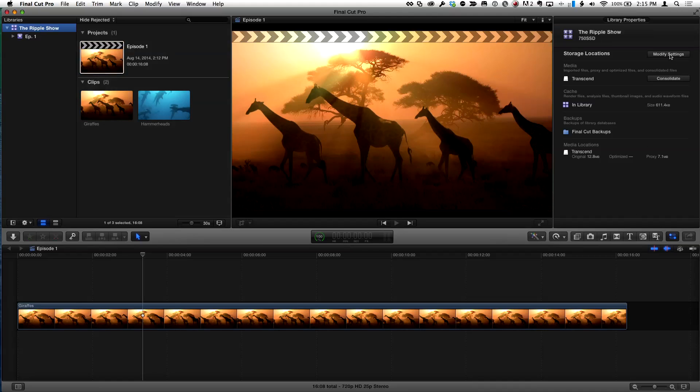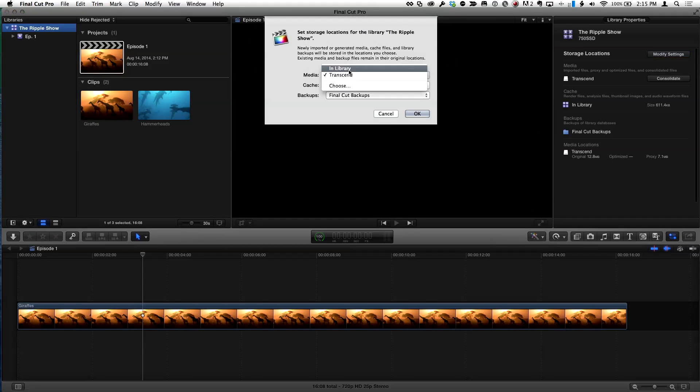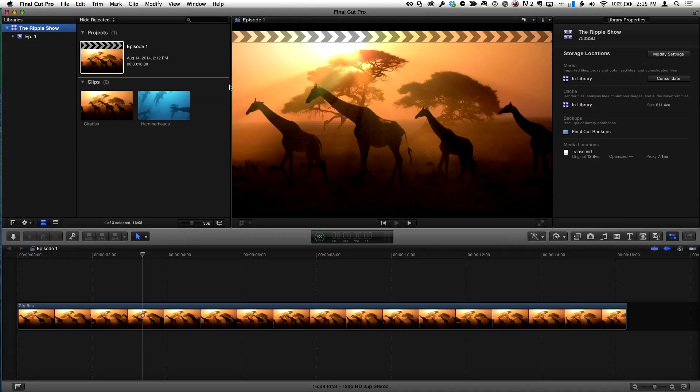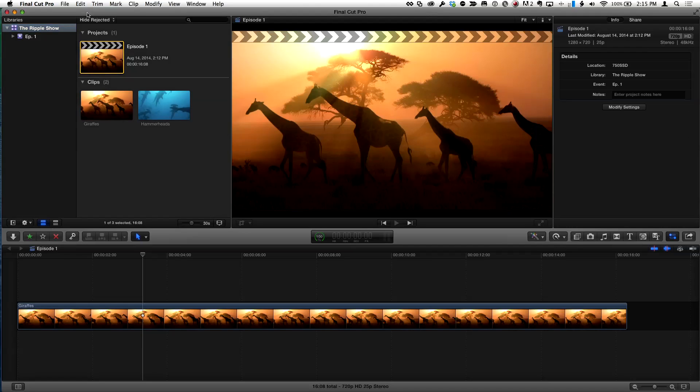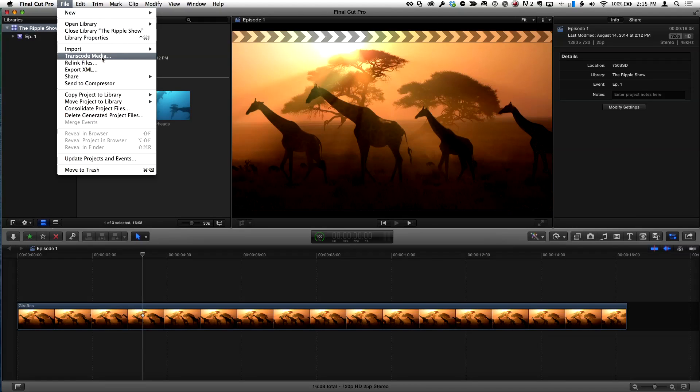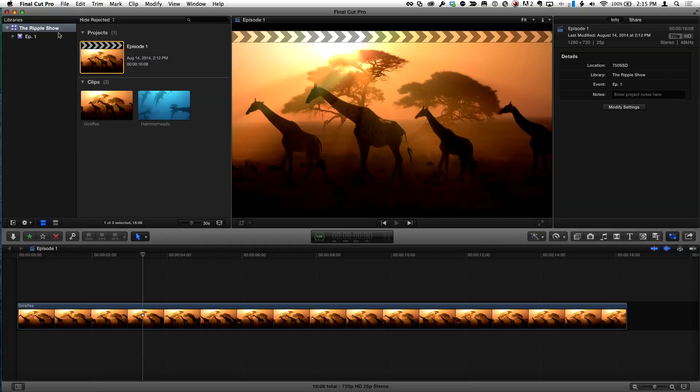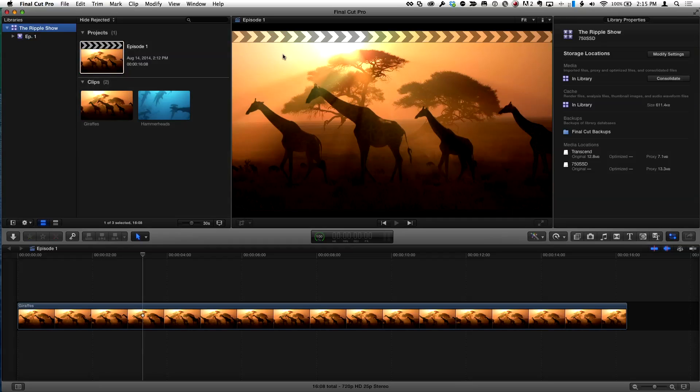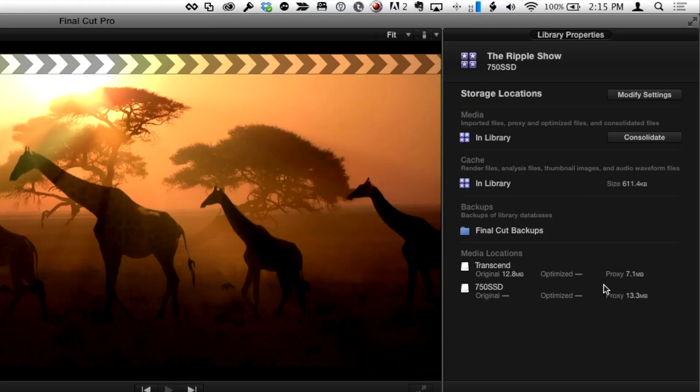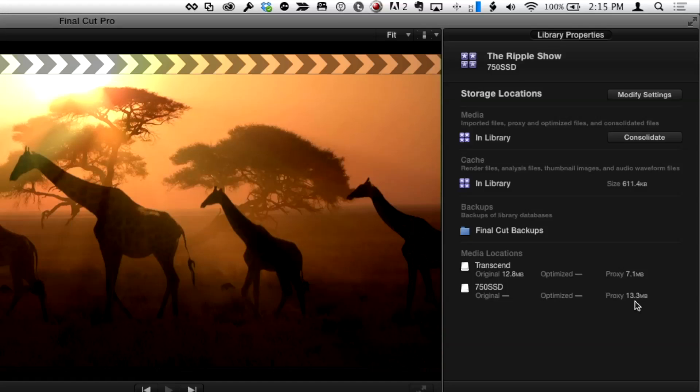Now what I can do with the library selected is change my storage location to the library on my local drive. Then with that project selected again, I can choose to transcode media which will transcode just that single clip in this case, just the clips in that project, which in this case is a single clip. So what I've done effectively is ended up with proxy media in two locations. All the proxy media that I don't need to have with me is still over on that RAID, but the proxy media I need with me is here with me where I need it.